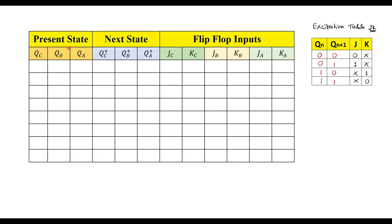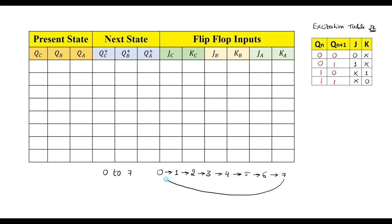The truth table consists of present state, next state, and flip-flop inputs. The present state is where present inputs are considered; the next state is the one after applying the clock pulse. Since we are designing a 3-bit up counter, the states are 0 to 7. The count sequence goes 0, 1, 2, 3, 4, 5, 6, 7, and after 7 it goes back to 0.